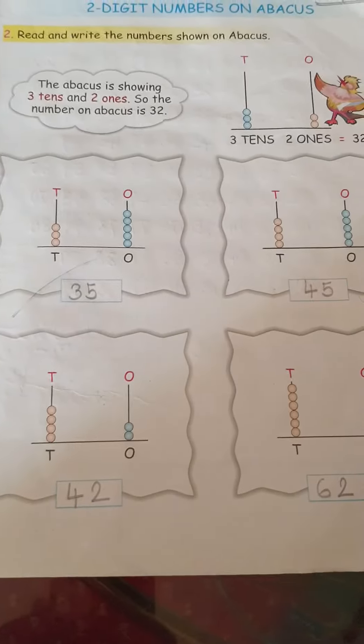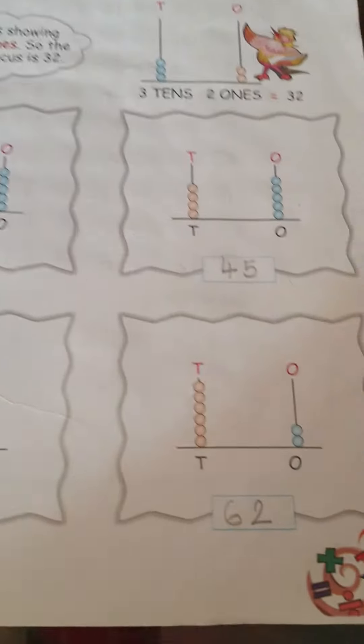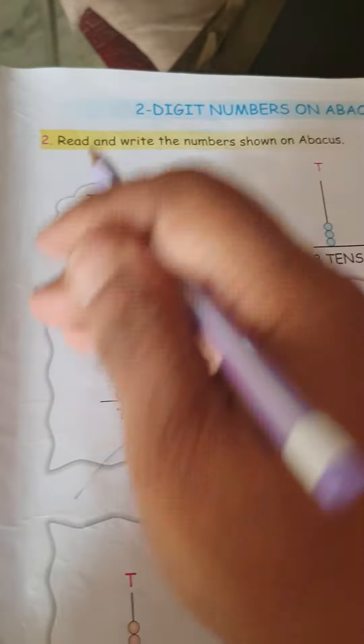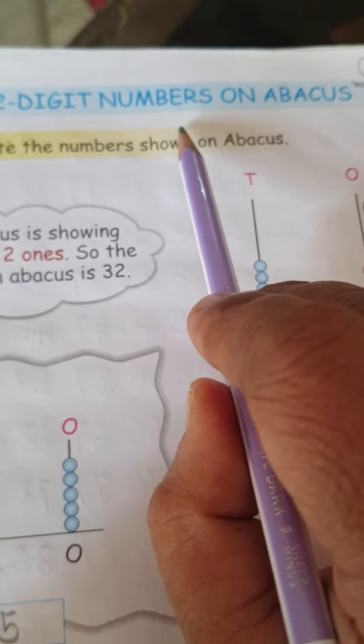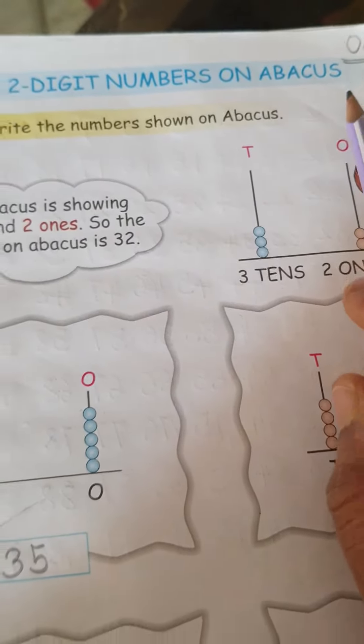Hare Krishna students, this is the second page. Please come to page number 13. Write here today's date and see what's here: two-digit numbers on abacus.